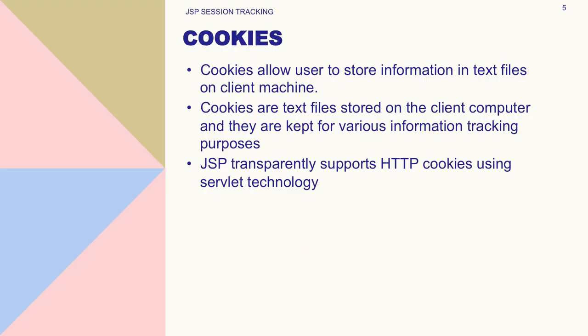In this slide, we will learn about cookies. The first question that arises is: what are cookies? Cookies allow users to store information in text files on the client machine — we can say it is state or data saved on the client machine. Cookies are text files stored on the client computer and they are kept for various information tracking purposes. JSP transparently supports HTTP cookies using servlet technology.